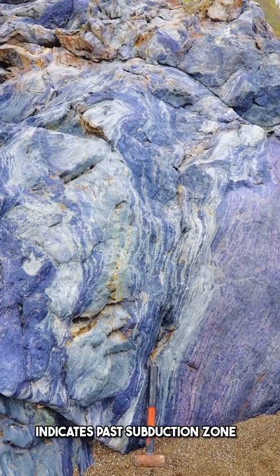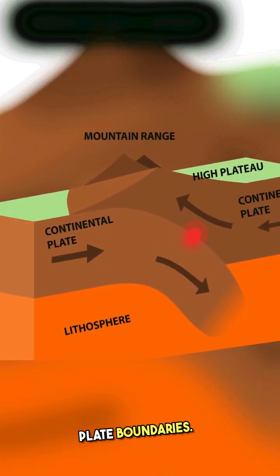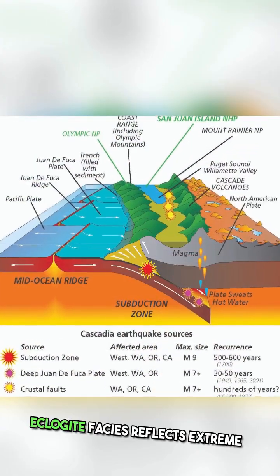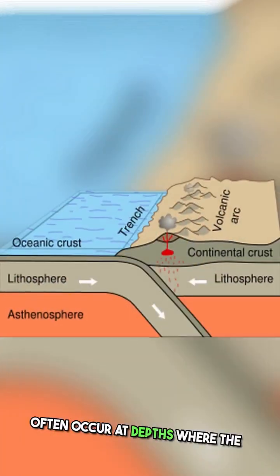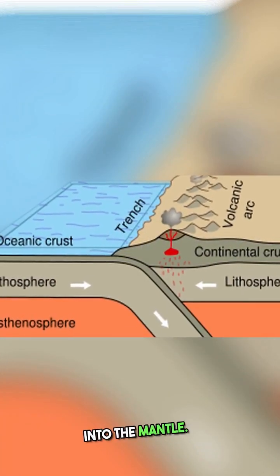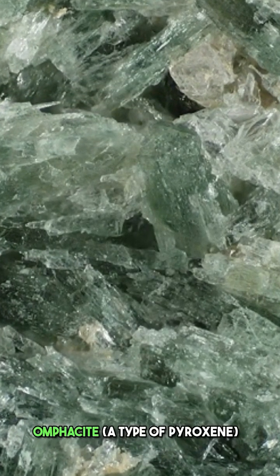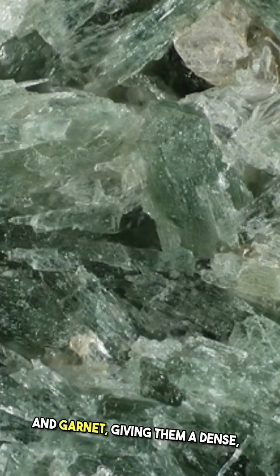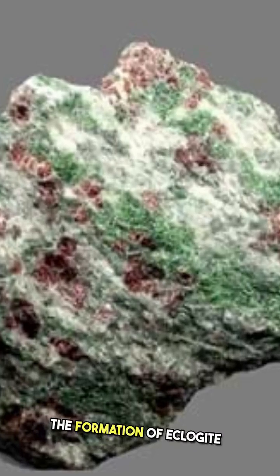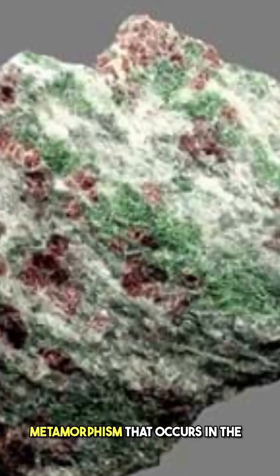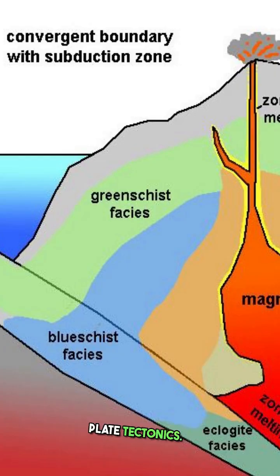The presence of blueschist indicates past subduction zone activity and provides evidence of ancient convergent plate boundaries. Eclogite facies reflects extreme pressure and moderate to high temperatures, above 500 degrees Celsius, often occurring at depths where the subducted oceanic crust descends into the mantle. Eclogites are characterized by the mineral assemblage of omphacite, a type of pyroxene, and garnet, giving them a dense, coarse-grain texture with green and red colors. The formation of eclogite signifies high-pressure metamorphism that occurs in the deep roots of subduction zones and provides clues about deep Earth processes and plate tectonics.